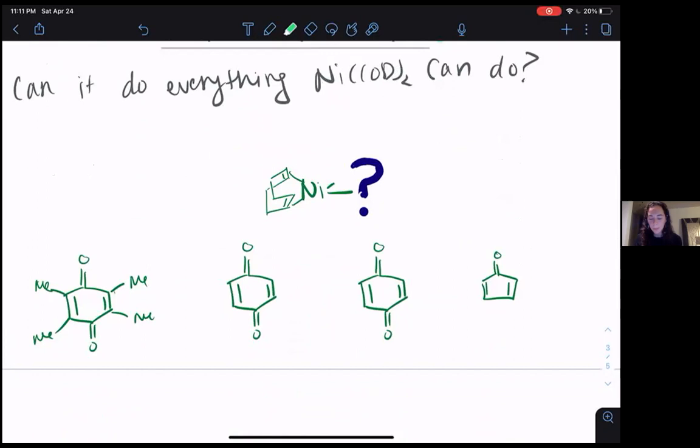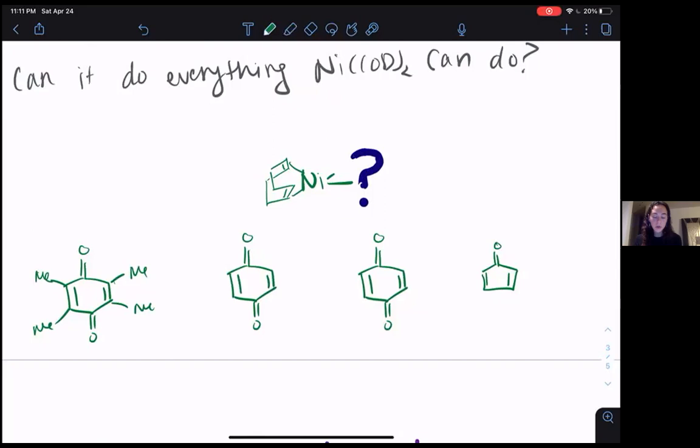If you think like a chemist, you would say, well, nickel cod DQ has these methyl groups here. Maybe we can change those methyl groups to something else and see how that affects the properties of the catalyst, the precatalyst that comes out. You could imagine you could put some other groups here.